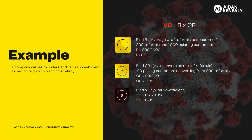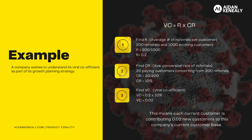This would mean that their CR is equal to 20 divided by 200, or 10%. The last step is to put this all into the equation. So the viral coefficient is equal to 0.2 times 10%, meaning the viral coefficient for this company is 0.02. So what this means for the company is that each of their current customers is contributing 0.02 new customers to the company's current customer base, and that isn't great.